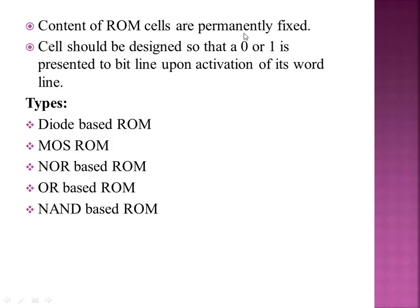The content of ROM cells is permanently fixed. If you have designed one cell, the data is either 0 or 1. We have a bitline activity. The cell should be designed so that a 0 or 1 is presented to the bitline upon activation of its wordline. That is called ROM.